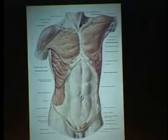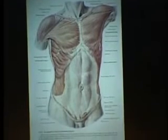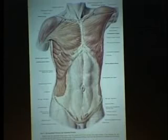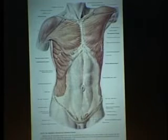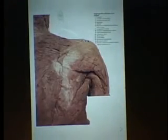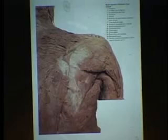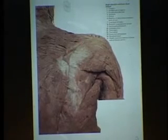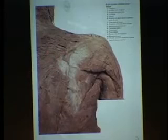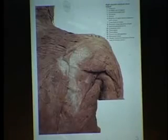Here's your sternocleidomastoid — here's your sternum, here's your clavicle or cleido, the two heads coming together to insert on the mastoid process. I use this picture to show you a little occipitalis up here and then the galea aponeurotica continuing over to become the frontalis. Here's your deltoid — the base of it coming down at the apex on the humerus, with the base on the lateral clavicle and lateral spine of the scapula. And here's the trapezius originating at the occiput, inserting on the spine of the scapula, with the ligamentum nuchae forming a trapezoid when you get both sides.